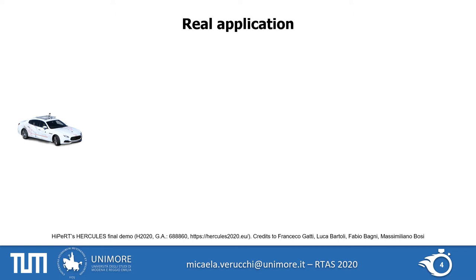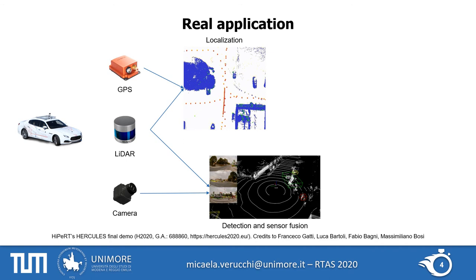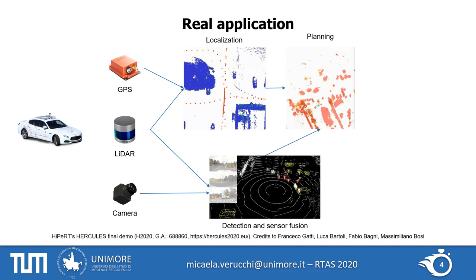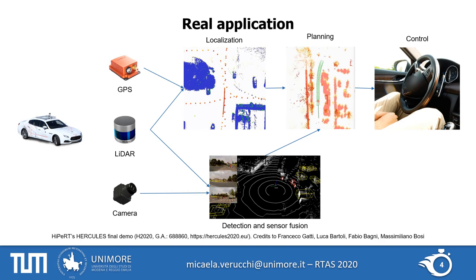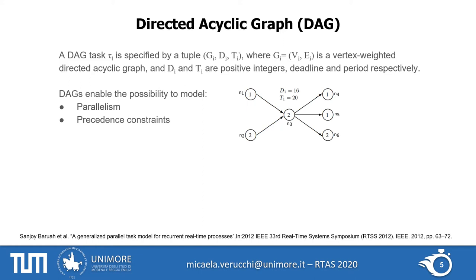Let us consider a real application: a self-driving car demo developed by my lab for a European project. Self-driving cars are a very complex real-time system. The car is equipped with three kinds of sensors — a GPS, a LiDAR, and four cameras — needed to perceive the surroundings and feed output to the application. The point cloud and GPS data are fed into the localization task, while the frames and point cloud are given to detection and sensor fusion. Localization and sensor fusion provide output to the planner, which feeds the control, and finally actuation is performed.